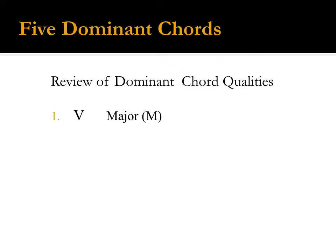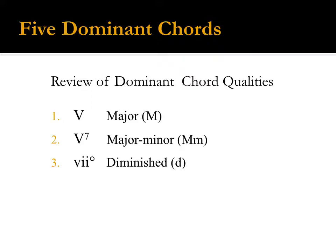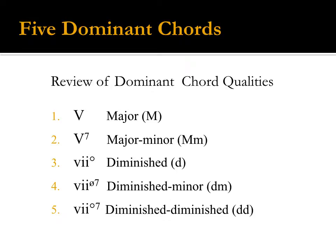There is the V chord, which is a major triad; the V7, a major-minor seventh chord; the vii°, which is a diminished triad; the ø7, a half-diminished seventh chord; and the fully diminished seventh chord, which is a diminished-diminished seventh chord.